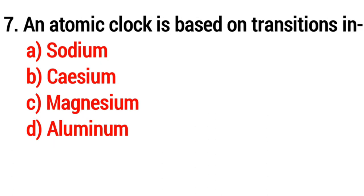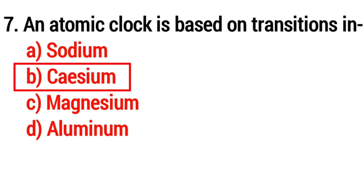Question number 7. An atomic clock is based on transition in? The answer is Option B, Cesium.